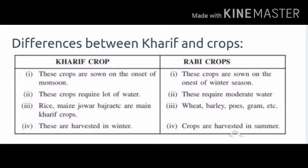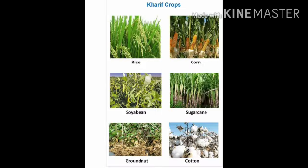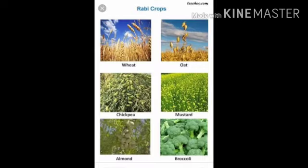As you can see, the differences you can write in your notebook also. Kharif crop examples: rice, corn, soya bean, sugar cane, groundnut, and cotton. These crops you can also see in this diagram.